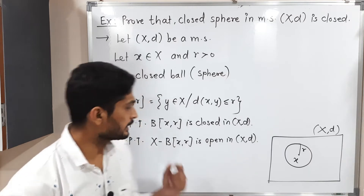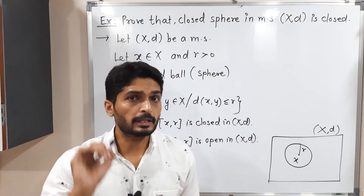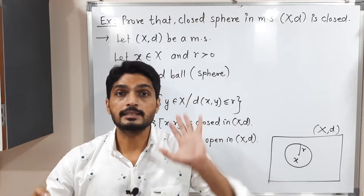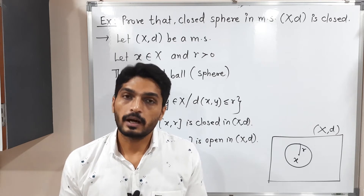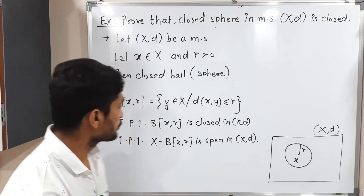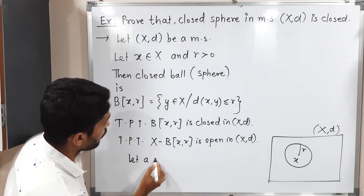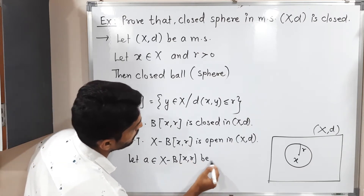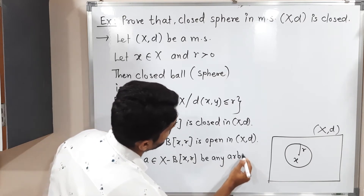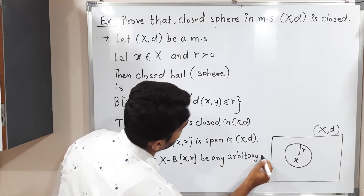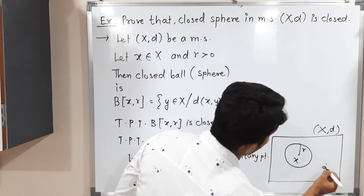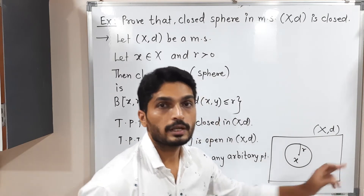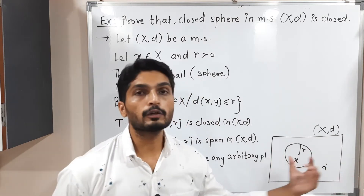To prove the complement is open, we take any arbitrary point and try to find an open ball around it which entirely lies inside the set — then we can declare it is an open set. Following the same technique, we take A belonging to X minus B(X, R) as any arbitrary point. Suppose there is one point A; now we should find one open ball around A which entirely lies in the complement of this closed ball.